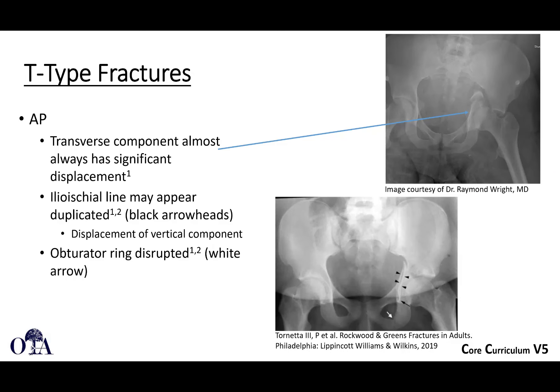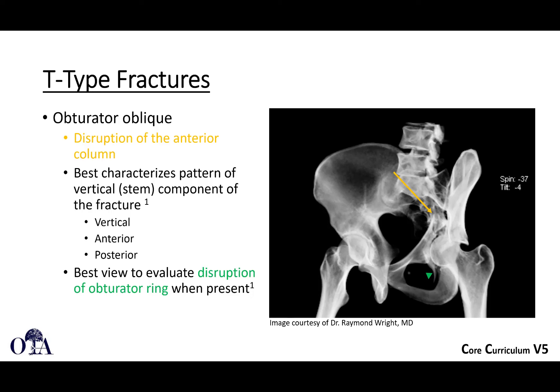The T-shaped fracture on the AP x-ray will look a little bit like a transverse fracture, with displacement and medialization of the head. The ilio-ischial line is disrupted and may appear somewhat duplicated. The obturator ring is disrupted, which is different from just a transverse fracture — so that's a hint that maybe you have a T-shaped fracture. On the obturator oblique view, you should see disruption of the anterior column and be able to see the vertical stem fracture. It's the best view to evaluate the structure of the obturator ring, which you typically should see disrupted with a T-shaped fracture.